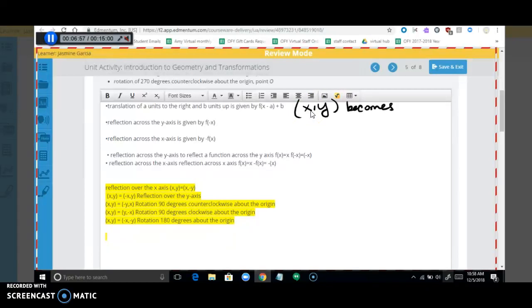So remember that up is Y plus, down is Y minus, right is X plus, left is X minus. So A units right, that's right here. So X plus A. B units up, Y plus B.